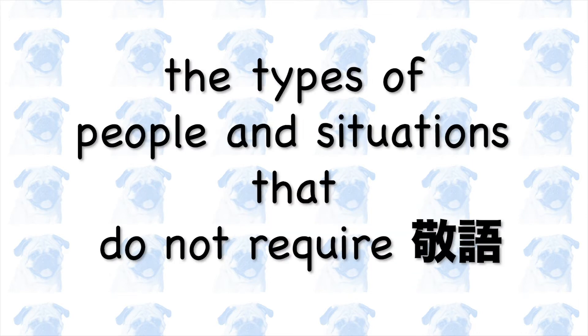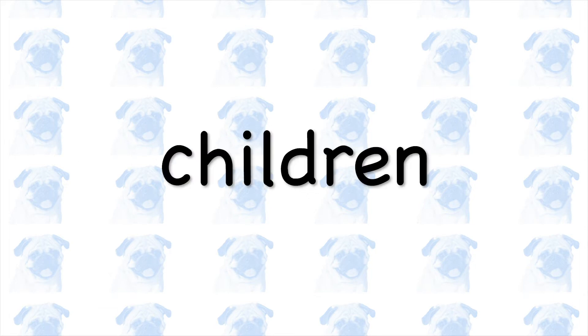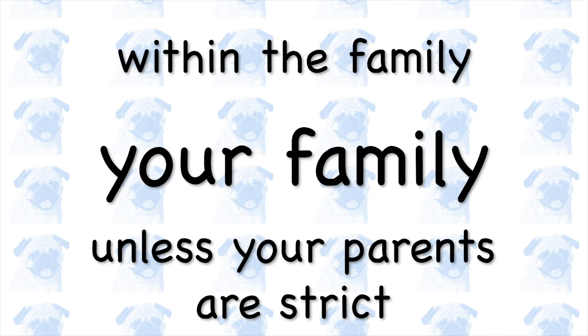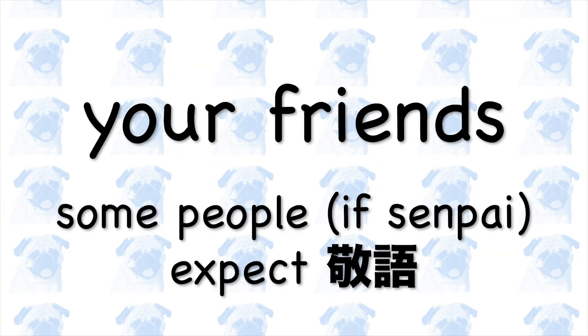And here's a list of the types of people you normally don't use keigo towards, and the types of situations where keigo is normally not expected: 1. Towards small children. 2. Towards your family members, unless your parents are strict and expect you to speak formally, and provided that you and your family are conversing amongst yourselves. 3. Towards your friends, although some people expect you to speak formally to them if they are senpai to you, even in the context of a friendly conversation.